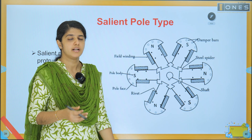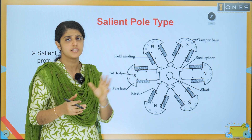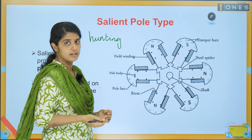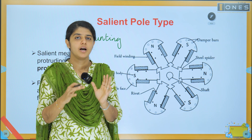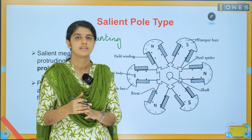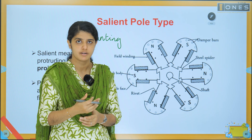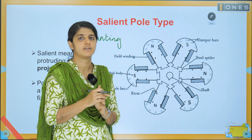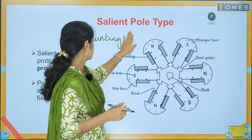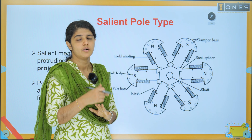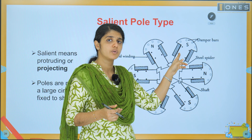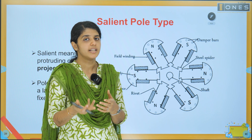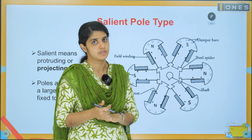The damper bar in the salient pole type has two separate functions. First, it can damp out rotor oscillations. Second, it can suppress voltage fluctuations and voltage variations in the alternator. Third, it can be used as a self-starting method — we can use this damper bar as an induction motor for starting.